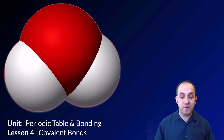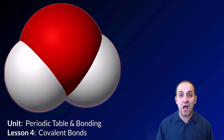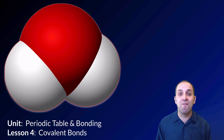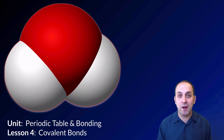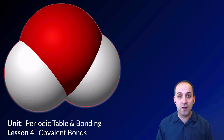Hi and welcome to our final discussion in our periodic table and bonding unit. In our last discussion we looked at ionic bonding. In this discussion we're going to look at the other major type of bonding we have to be familiar with, which is covalent bonding. I've put a molecule up here which you probably recognize as water, and that's because water is a great example of a covalently bonded substance. Let's go in and take a look at covalent bonds and how they work.